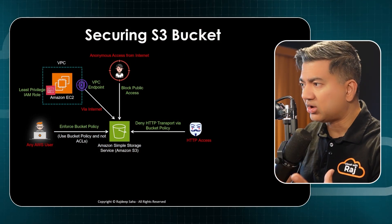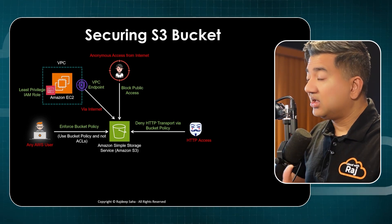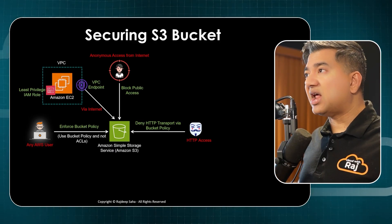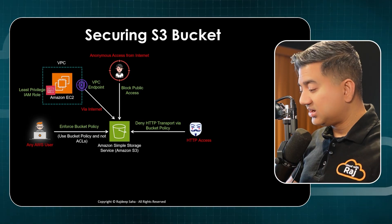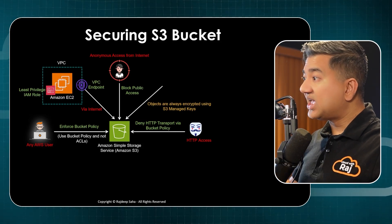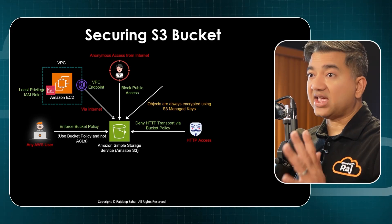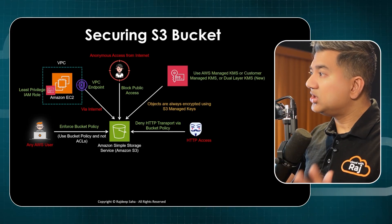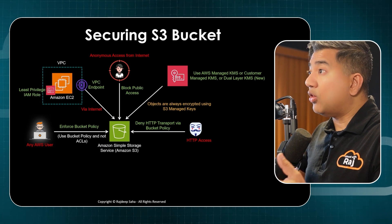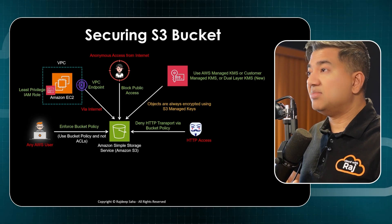People always talk about encrypting bucket objects. Here's the thing: if you think bucket objects are unencrypted by default, you are wrong. That used to be the case, but after multiple incidents AWS now encrypts bucket objects by default using S3-managed server-side keys — so there's no such thing as unencrypted objects in S3. However, you can also use AWS-managed KMS, customer-managed KMS where you bring your own key, or the newly released dual-layer KMS.